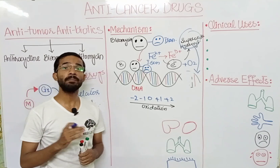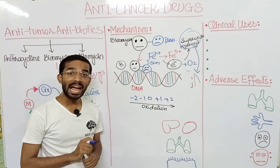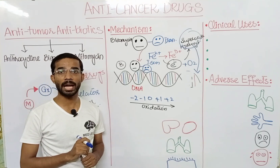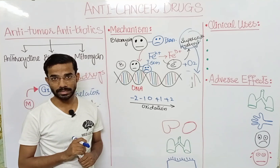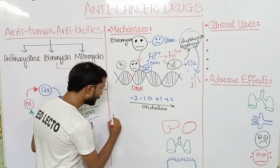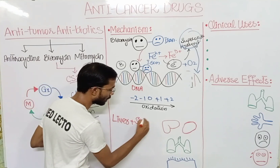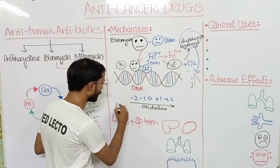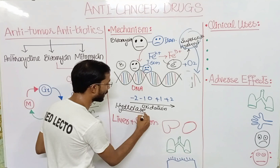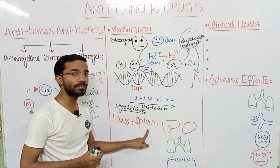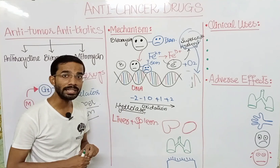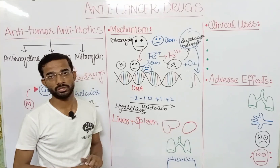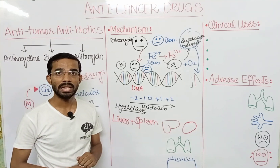In our body there are enzymes that inactivate or destroy bleomycin, and their distribution varies according to the organ in which they are present. In the liver and spleen, the enzyme that inactivates bleomycin is hydroxylase. There is a large amount of hydroxylase in the liver and spleen, meaning that when bleomycin enters the liver and spleen, it will be destroyed because there is plenty of hydroxylase present.